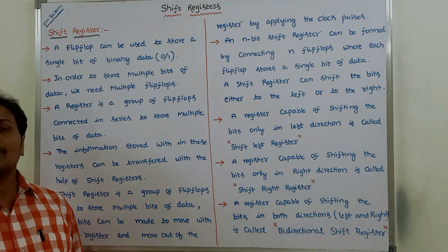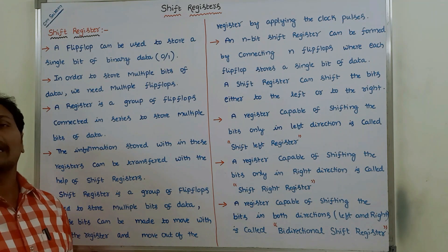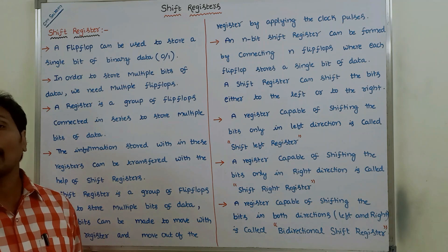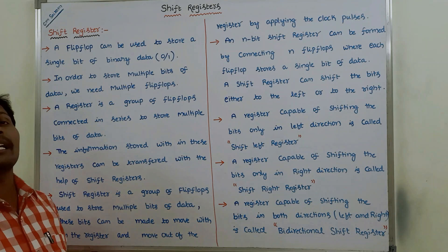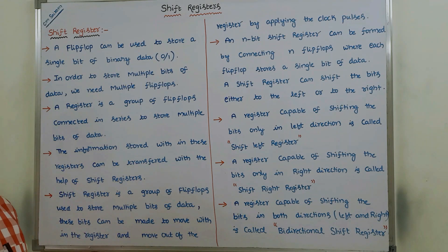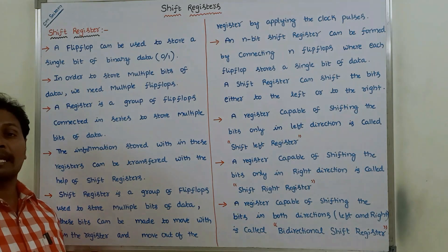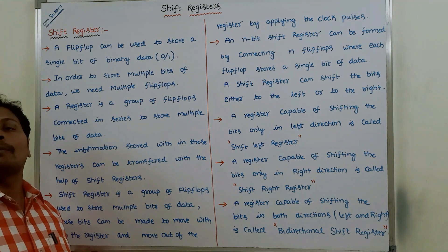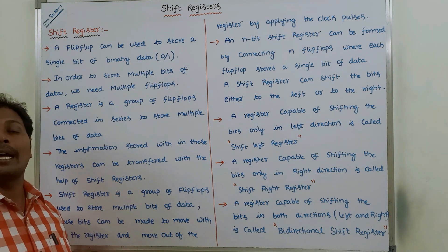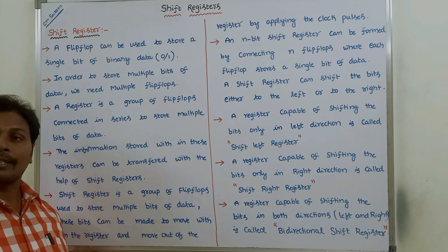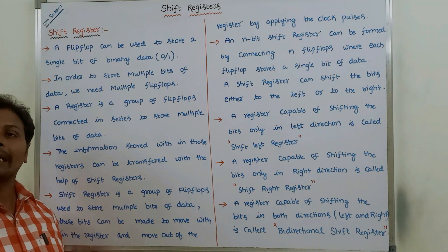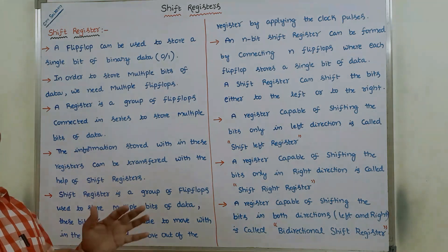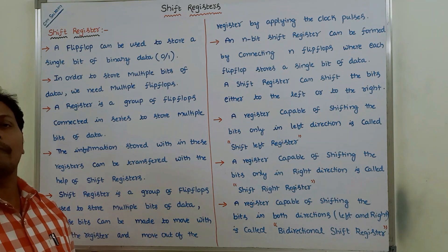A register that can shift in both directions is called a bidirectional shift register. A register capable of shifting data in both left and right directions and also containing parallel load capabilities is called a universal shift register. It can take data in parallel form and also produce data in parallel form, all within a single register.